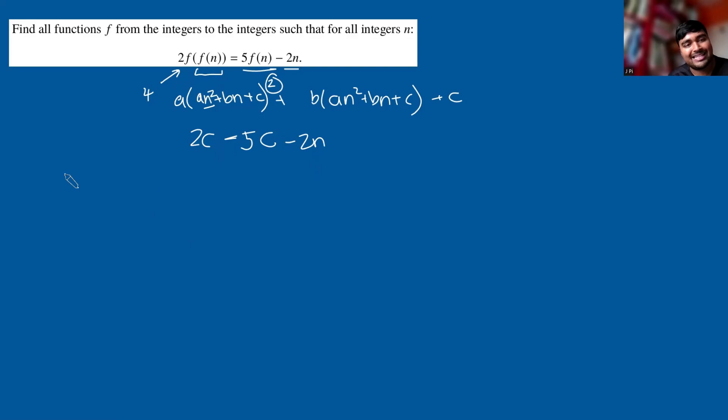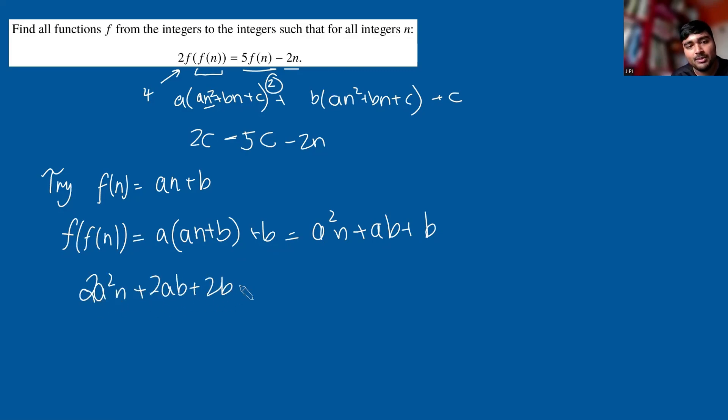Let's try f(n) = an + b, where a and b are just some numbers here. We're going to try and work out what they are. So what does our left-hand side become? We've got 2f(f(n)). So f(n) is an + b. So f(f(n)) would be a(an + b) + b, which simplifies to a²n + ab + b.